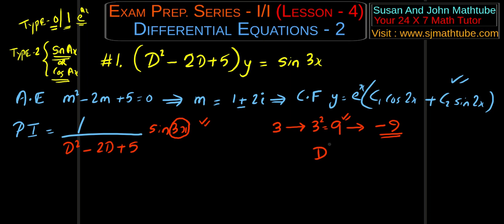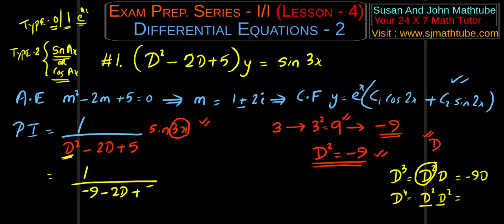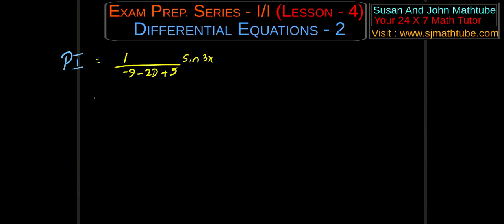If you get D cubed, write it as D squared times D, and replace D squared with minus 9. If it's D to the power 4, write D squared times D squared, giving minus 9 times minus 9, which is 81. So: 1 over (minus 9 minus 2D plus 5) of sine 3x, which equals 1 over (minus 2D minus 4) of sine 3x.